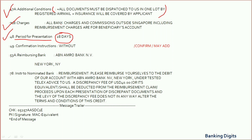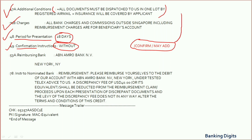Field 49 refers to the confirmation instruction. Here it is written as 'without,' meaning this is not a confirmed LC. It can also be stated as 'confirm' or 'may add.' In the case of 'may add,' the confirming bank details may be mentioned in Field 47A.